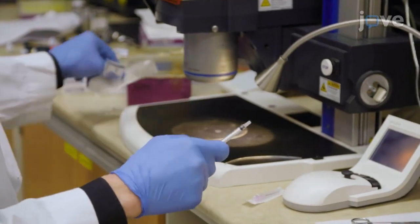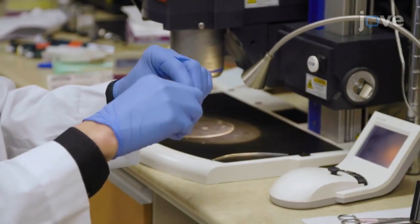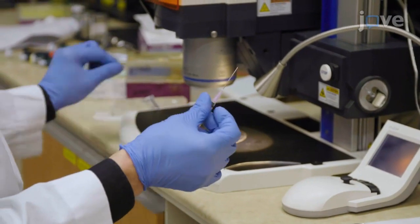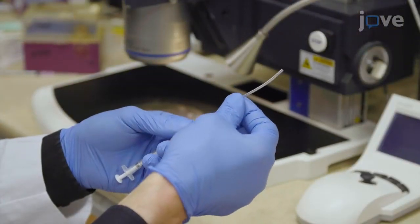To assemble the injection apparatus, mount a needle onto the syringe, and then extend the syringe needle with a 3-5 cm long piece of tubing.